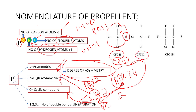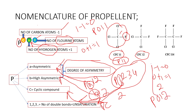For Propellant 12: number of carbons is one, minus one equals zero. Number of hydrogens is zero, plus one equals one. Number of fluorines is two. Hence we write Propellant 0012, or simply Propellant 12.